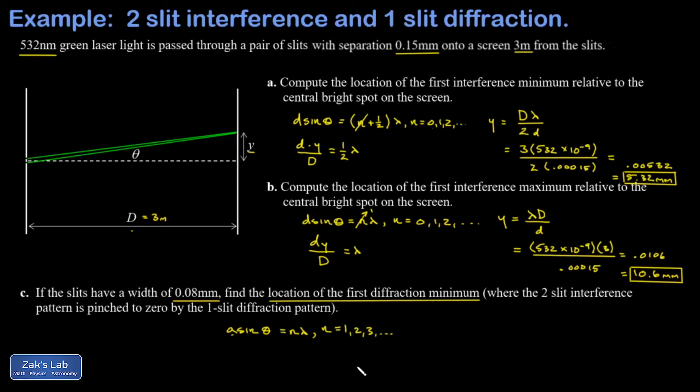And again we make the small angle approximation: sin θ is approximately tan θ, which is y over D. And we sub in n equals one for the first diffraction minimum off the center line, and we get y equals λ D over the slit width a. Sub everything in in the right units. I just tacked on three zeros to turn the millimeters into meters.